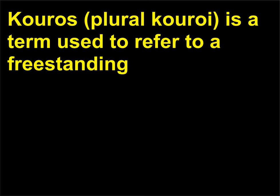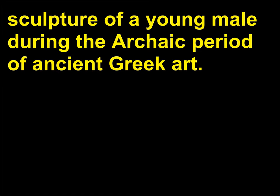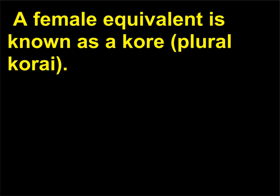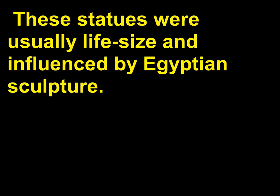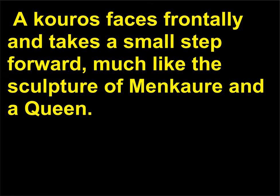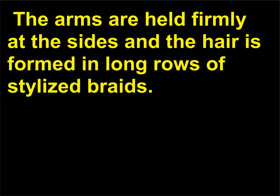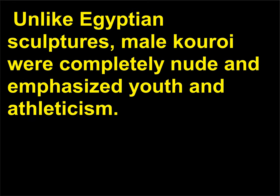What is a Kouros? Kouros, plural Kouroi, is a term used to refer to a freestanding sculpture of a young male during the archaic period of ancient Greek art. A female equivalent is known as a Kore, plural Korai. These statues were usually life-size and influenced by Egyptian sculpture. A Kouros faces frontally and takes a small step forward, much like the sculpture of Menkaure and a Queen. The arms are held firmly at the sides and the hair is formed in long rows of stylized braids. Unlike Egyptian sculptures, male Kouroi were completely nude and emphasized youth and athleticism.